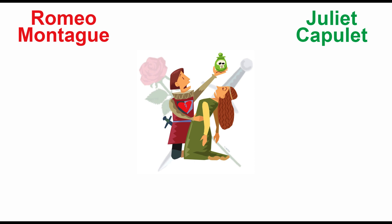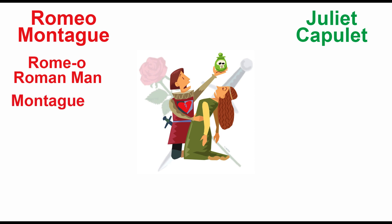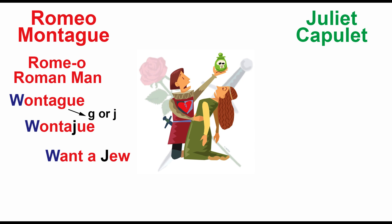We have Romeo Montague and Juliet Capulet. The letter O at the end of a word or name usually signifies masculinity, so the name 'Romeo' is really 'Rome' with an O — a Roman man. Now the last name Montague: starting with the letter M, we manipulate or move it, turning it upside down. The letter G can be pronounced two ways — hard or soft — so assuming it's soft, we get 'once a Jew.' So we have a Roman man who was once a Jew.